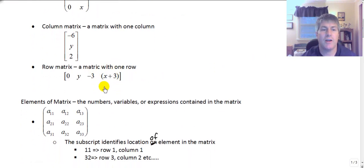So as you can see here elements of a matrix are the numbers, variables, or expressions contained within the matrix. So the matrix above this row matrix has the numbers 0 and negative 3. It has the variable Y. It also has the expression x plus 3. Now you may or may not see that in parentheses. I included that just to emphasize that that could be an element of the matrix.